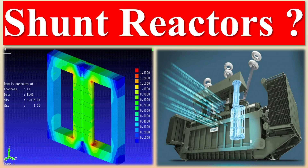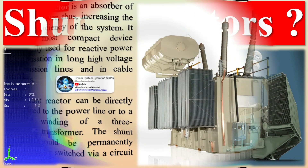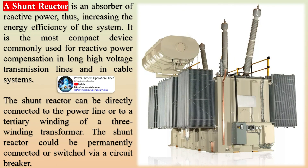A shunt reactor is an absorber of reactive power, thus increasing the energy efficiency of the system. It is the most compact device commonly used for reactive power compensation in long high-voltage transmission lines and in cable systems. The shunt reactor can be directly connected to the power line or to a tertiary winding of a three-winding transformer.